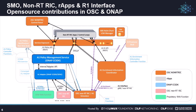As mentioned, the non-RT-RIC terminates the A1 interface, so services to manipulate A1 policies in the RAN and to support passing A1 enrichment information to RAN functions over the A1 interface are shown. The A1 policy functions are contributed to ONAP, while the A1 enrichment information functions can be found in OSC. A service exposure function in OSC will form the basis of an R1 service exposure gateway to manage R-Apps accessing the non-RT-RIC and SMO services, and other R-Apps.